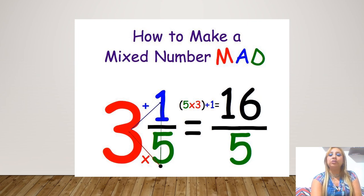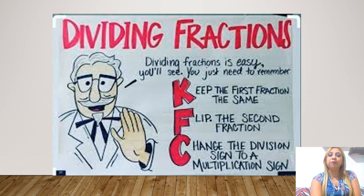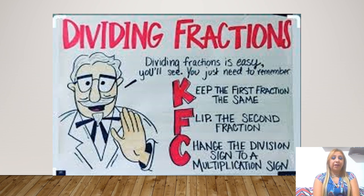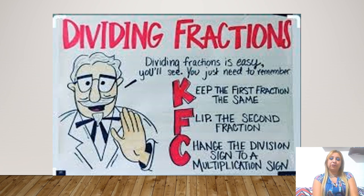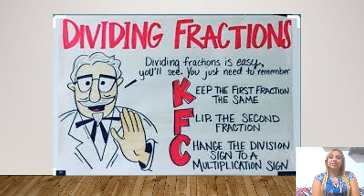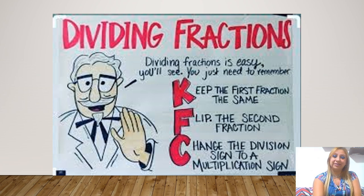This is all about week 4. Don't forget the KFC method, which is used for dividing fractions and mixed numbers. K is for keep the first fraction the same, F is for flipping the second fraction, and C is for changing the division sign to the multiplication sign.